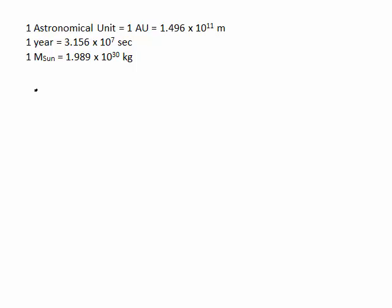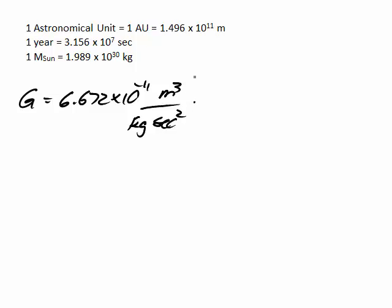So, let's take that value for big G, 6.672 times 10 to the negative 11 meters cubed over kilograms seconds squared, and we're going to do a unit conversion. We're going to convert the meters into astronomical units. So, we've got 1.496 times 10 to the 11 meters is 1 astronomical unit, or the semi-major axis of the Earth's orbit is 1 AU.